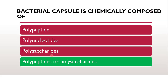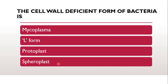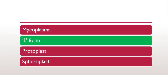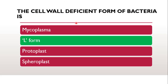The correct answer is polypeptides or polysaccharides. Next question: the cell wall deficient form of bacteria is known as — mycoplasma, L-form, protoplast, or spheroplast? The correct answer is L-form. By the action of lysozymes, which are responsible for cell wall destruction, mutation takes place and the protoplast converts to a different shape through mutations, which is known as L-form. Cell wall deficient forms of bacteria are known as L-forms.